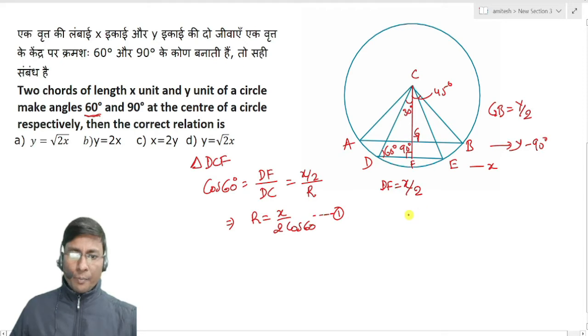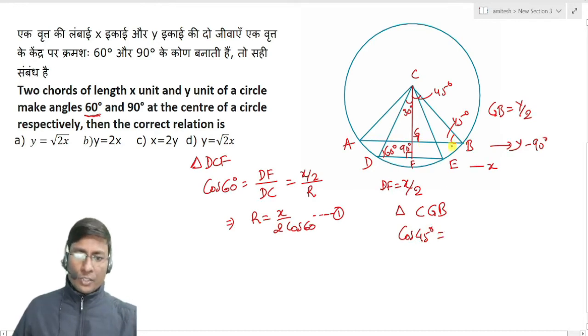Second case: in triangle CGB, this angle is 45 degrees. So we can say cos 45 degrees equals the base GB divided by hypotenuse. Here you will get R equals GB, which is y by 2, divided by cos 45. This is equation number 2.